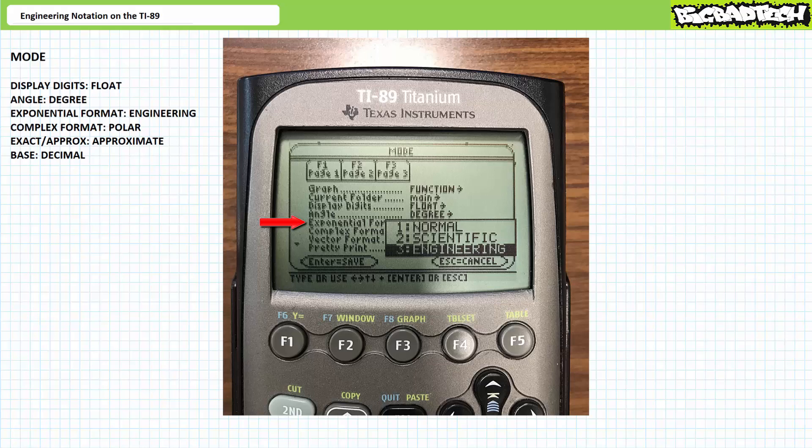Walk down to exponential format using the down arrow key and press the right arrow key to access this menu. Walk down the list with a down arrow key. The option I'm going to choose is three, engineering. Press enter to save this option. This is the option we're going to spend some time discussing today.